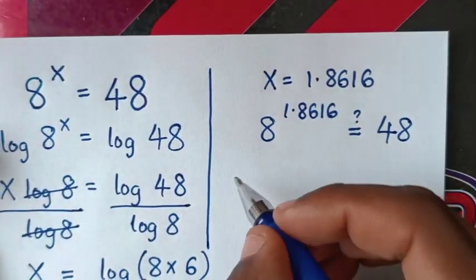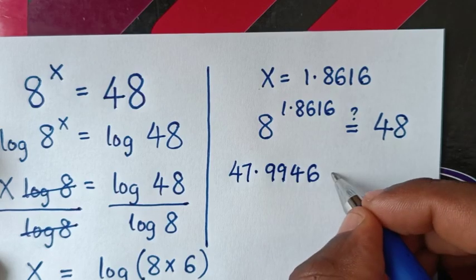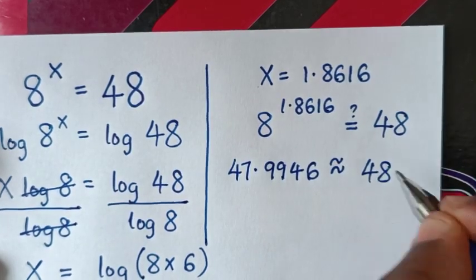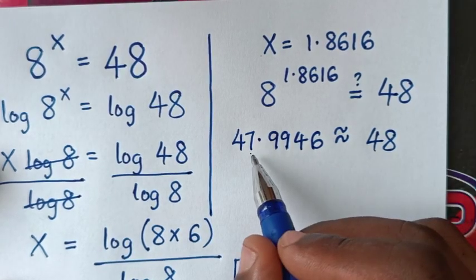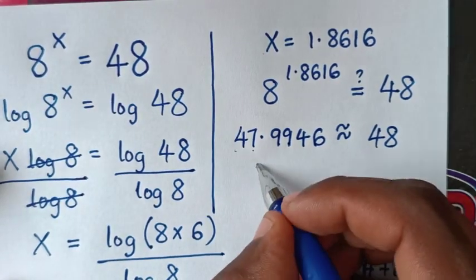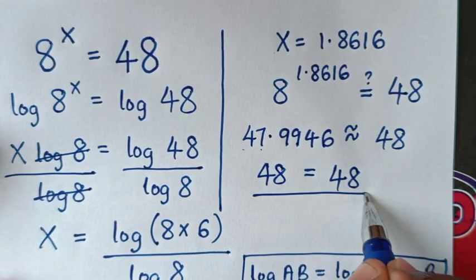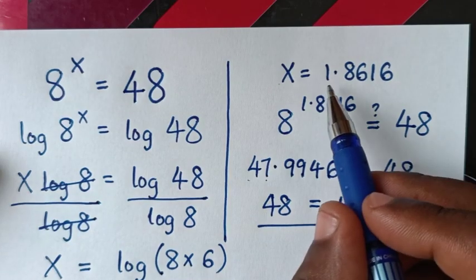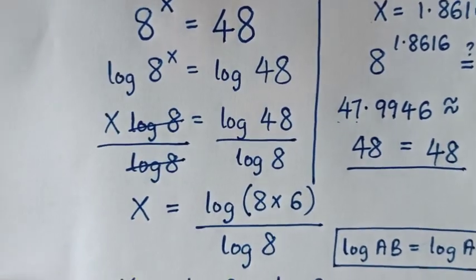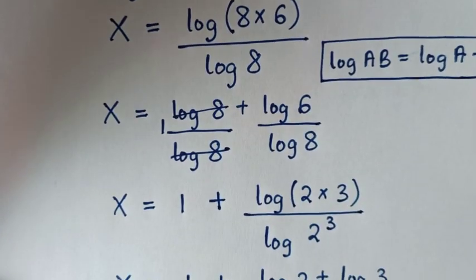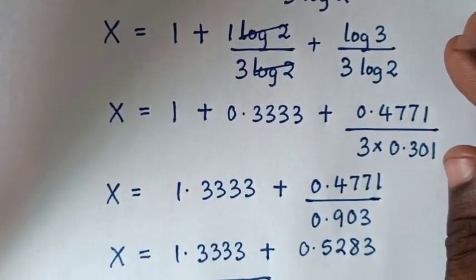So 47.9946 is approximately equal to 48. When you round off, the 0.99 rounds up, so 47 plus 1 equals 48, which is equal to 48. Left side and right side are equal, so it is true that the value of x is 1.8616. Thank you, don't forget to subscribe to my channel, and see you in the next video, bye bye.